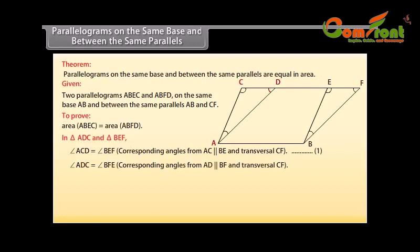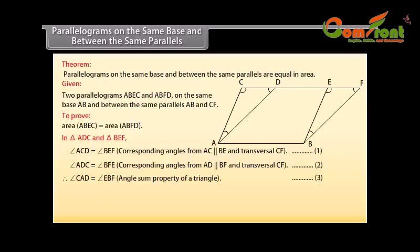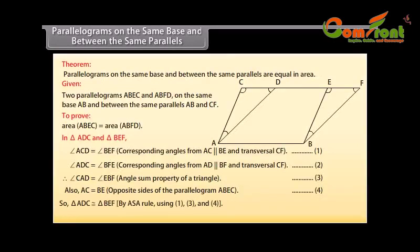Angle ADC is equal to angle BFE because these are corresponding angles from AD parallel to BF and transversal CF. Mark it as two. Therefore, angle CAD is equal to angle EBF by the angle sum property of a triangle. Mark it as three. Also, AC is equal to BE, opposite sides of the parallelogram ABEC. Mark it as four. So, triangle ADC is congruent to triangle BEF by ASA rule using one, three, and four. Therefore, area of ADC is equal to area of BEF because congruent figures have equal areas. Mark it as five.